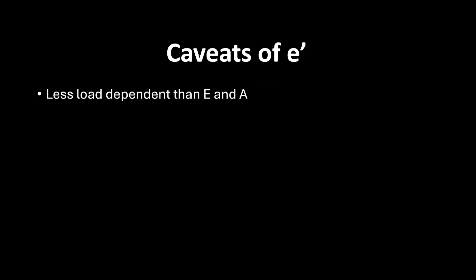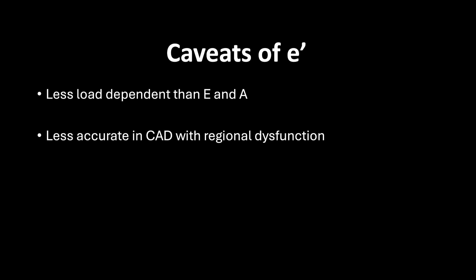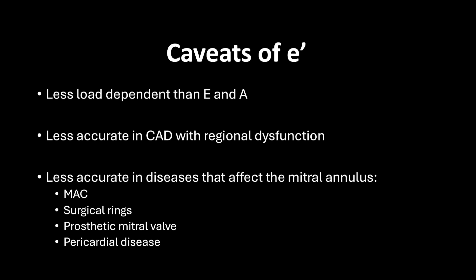Caveats of E-prime: E-prime values are less load dependent than E and A, but some load dependence remains. E-prime values are not accurate when there is regional LV dysfunction, which causes some segments of the LV muscle to move slower than others. E-prime values are also not accurate in diseases that affect the mitral annulus, including mitral annular calcification, surgical rings, a prosthetic mitral valve, and pericardial diseases such as constrictive pericarditis.